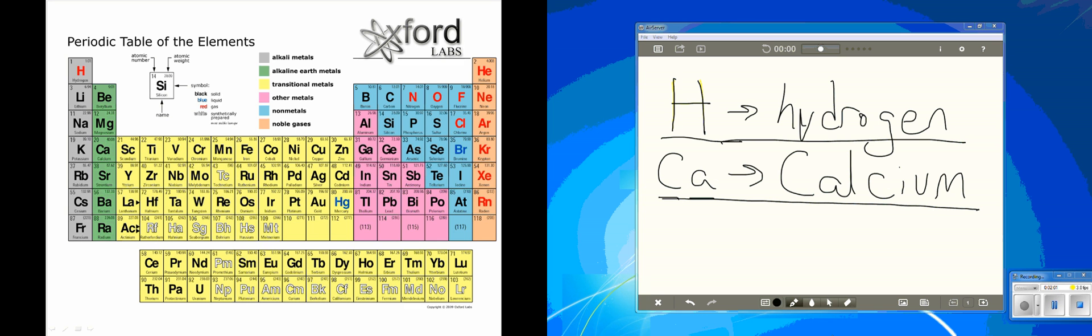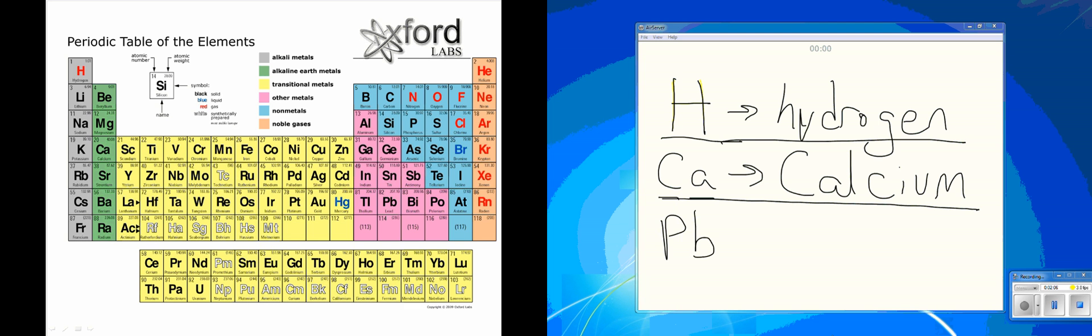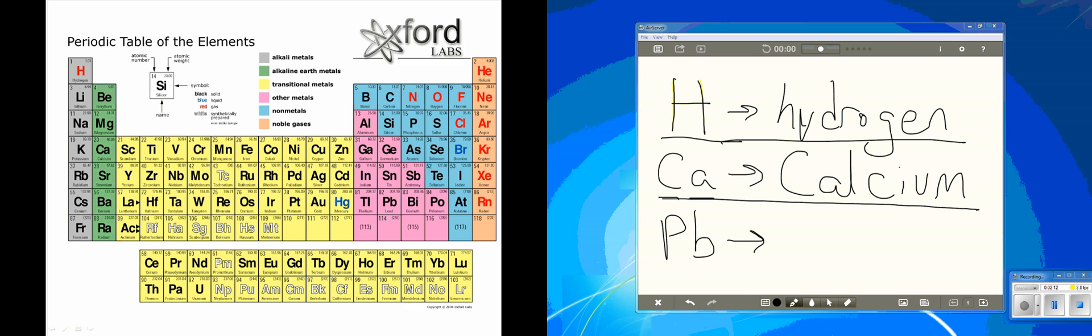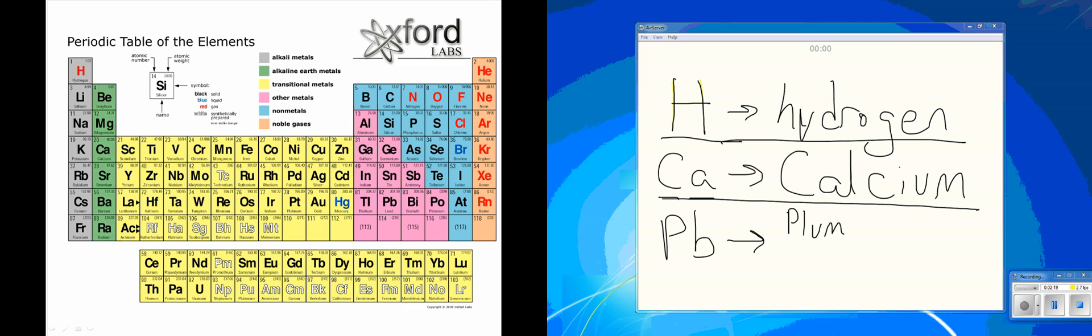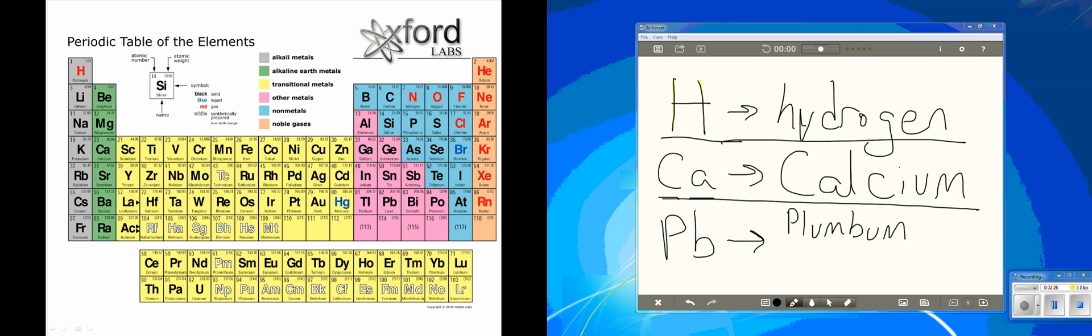If we look at element 82, which is Pb for lead, you're probably thinking how do they get Pb from lead? Well, the Latin name for lead is plumbum. Some elements, when the obvious letters were already used—like P for phosphorus or L for lithium—they used the Latin name instead. So Pb comes from plumbum.